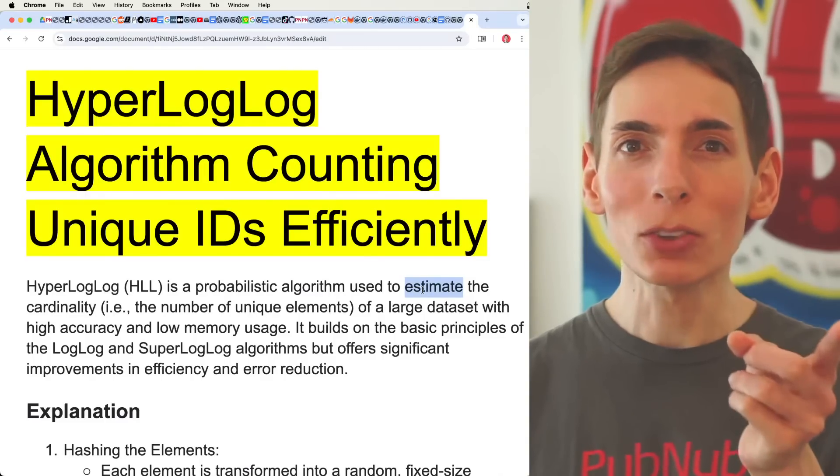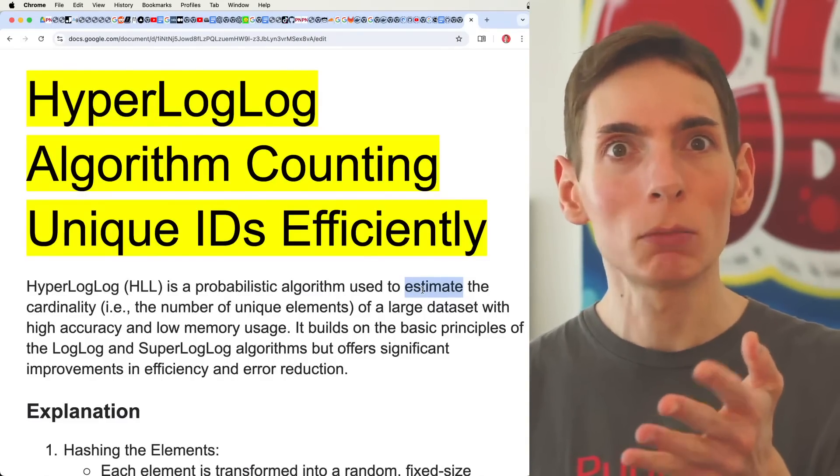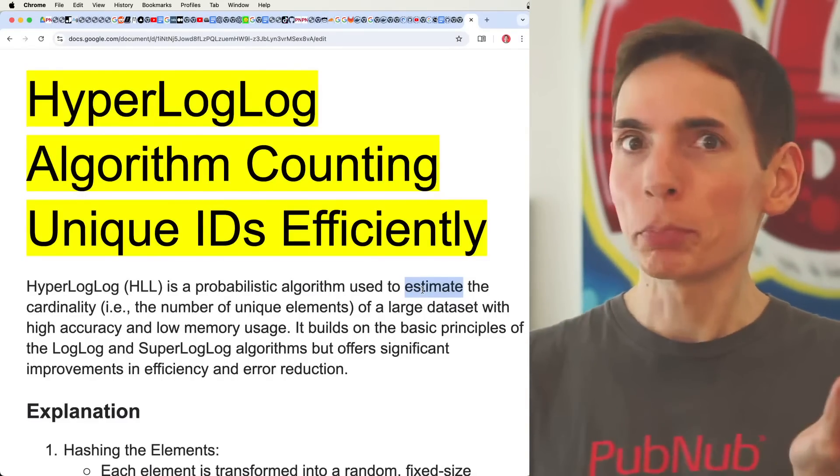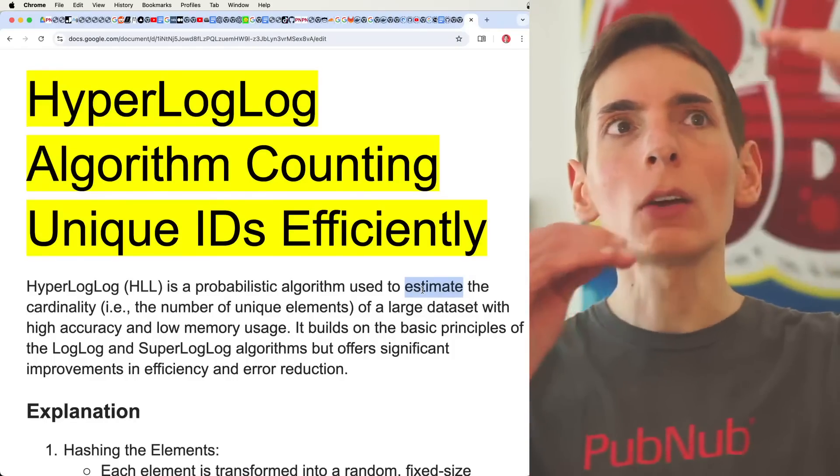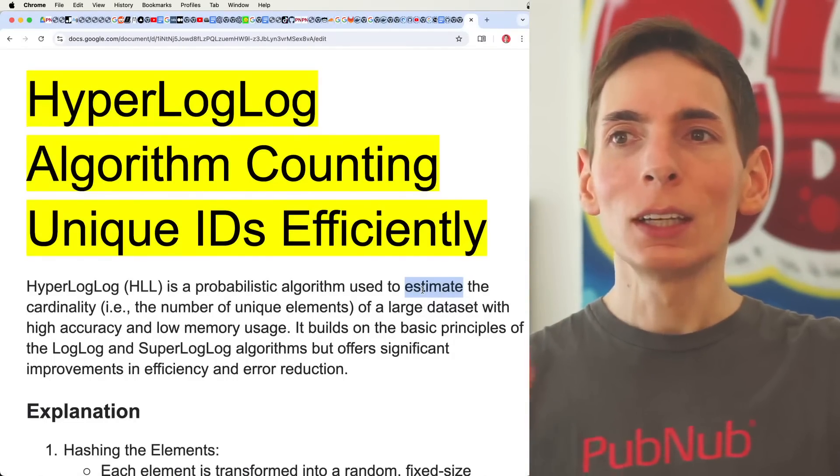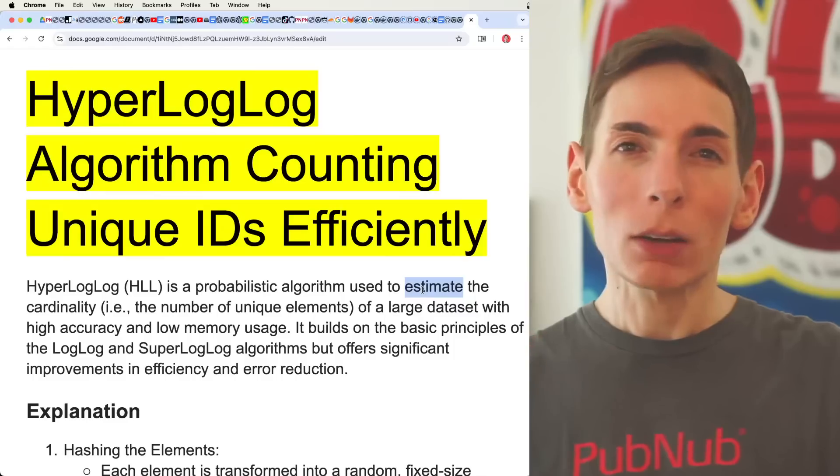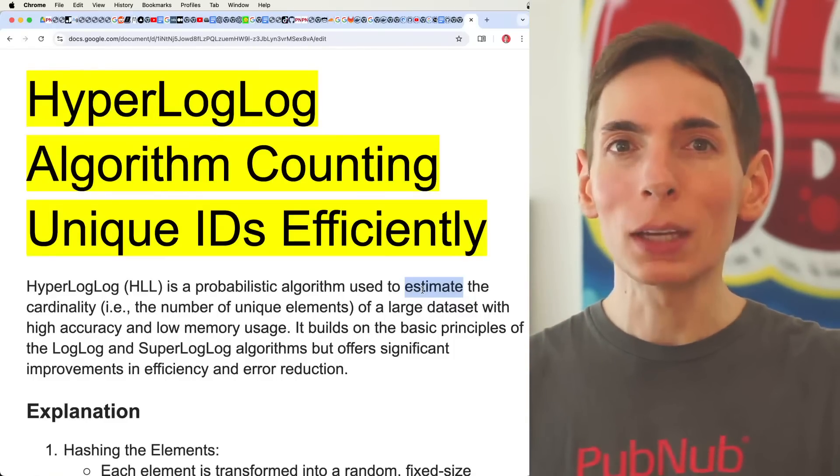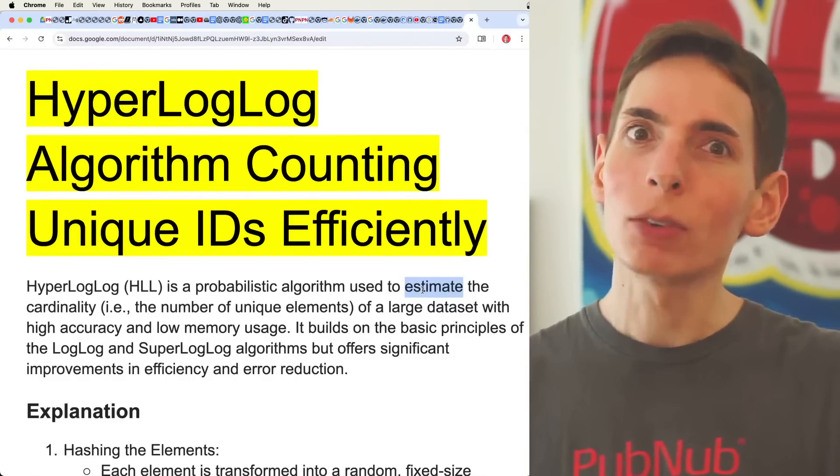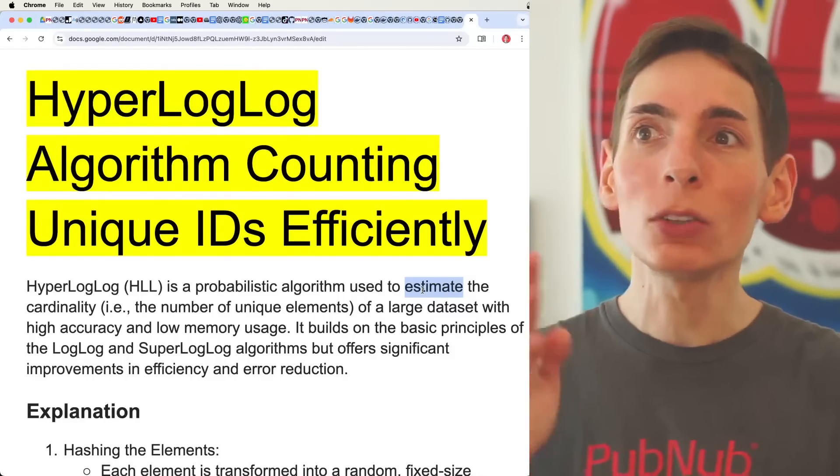It will get really close though, like 99.9%, which is good enough. That's plenty enough, especially when you have very large numbers. The amount of error doesn't matter that much because the numbers are so big, we don't really care about the rounding of those numbers. So you might as well use HyperLogLog.